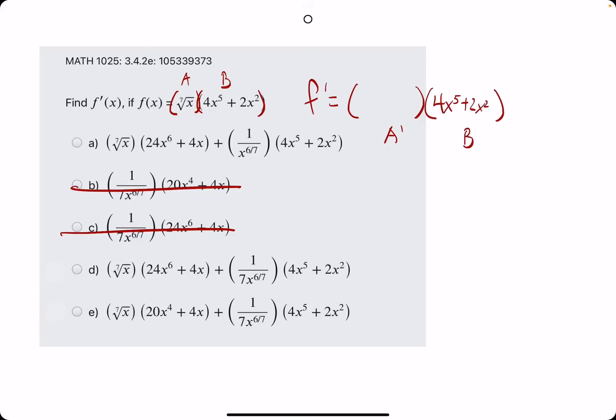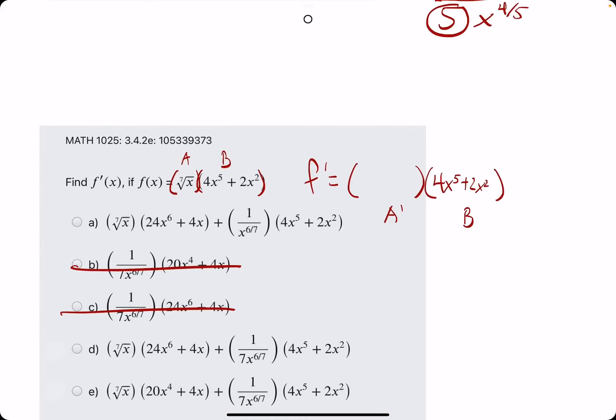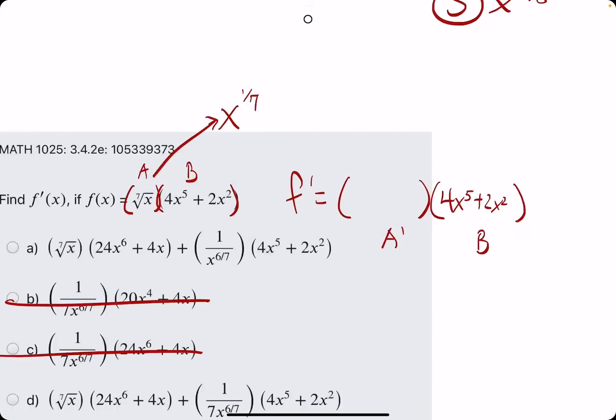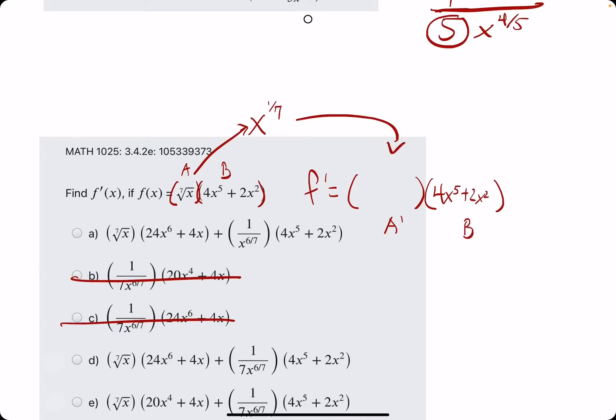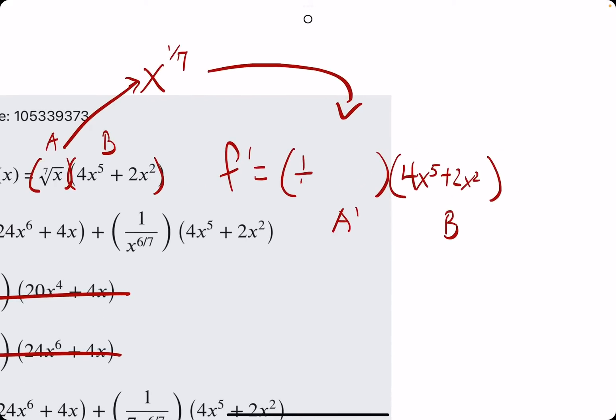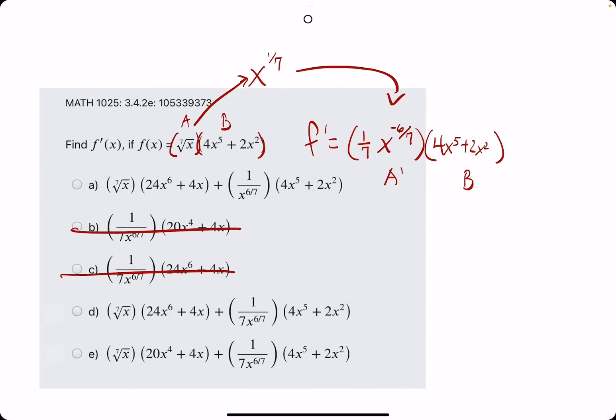So, A prime is the derivative of the 7th root of x, which is equivalent to x to the 1/7th. Which, when we take its derivative, will give us 1/7th x to the 1 minus 7 is negative 6, and we leave it over 7. So, negative 6/7ths.